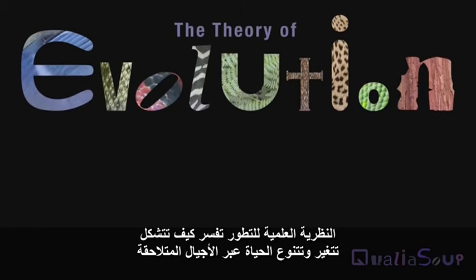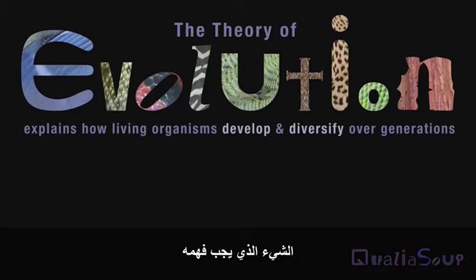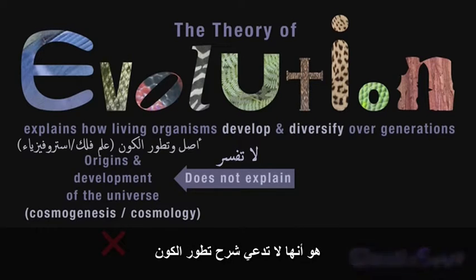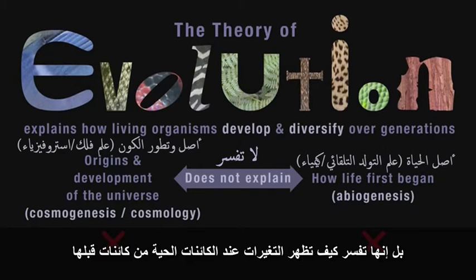The scientific theory of evolution explains how life forms develop and diversify over generations. Something to understand straight away is that it doesn't claim to explain the development of the universe or how life was first begun. It explains how new varieties of life form emerge from earlier life forms.